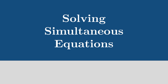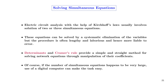Electric circuit analysis with Kirchhoff's laws usually involves solving two or three simultaneous equations. Solving these manually by elimination is lengthy and error-prone. We can use the method of determinants and Cramer's rule to solve the network of equations through manipulation of their coefficients. In this section, we'll review solving simultaneous equations using the method of determinants.